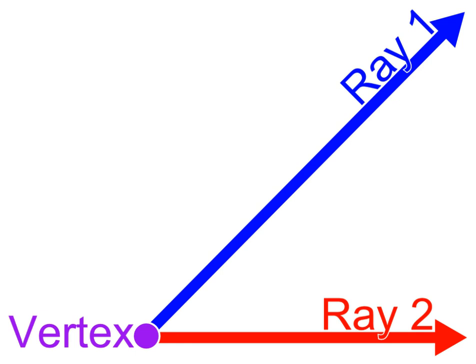An angle equal to 1/4 turn is called a right angle. Two lines that form a right angle are said to be normal, orthogonal, or perpendicular. Angles larger than a right angle and smaller than a straight angle are called obtuse angles — obtuse meaning blunt.